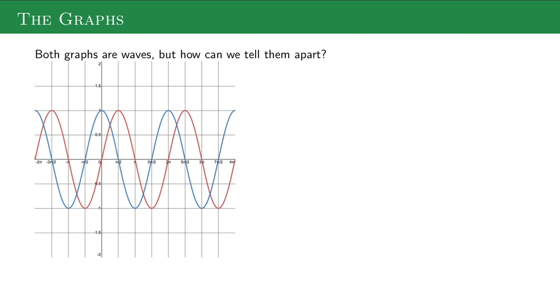If we graph them, we get these infinite waves. They keep going forever to the left and to the right. But how can we tell which one is which? You should know they're waves.